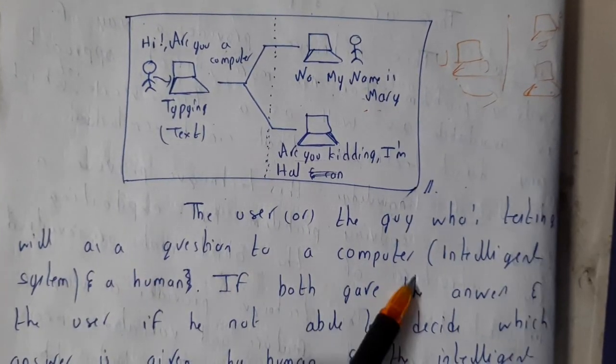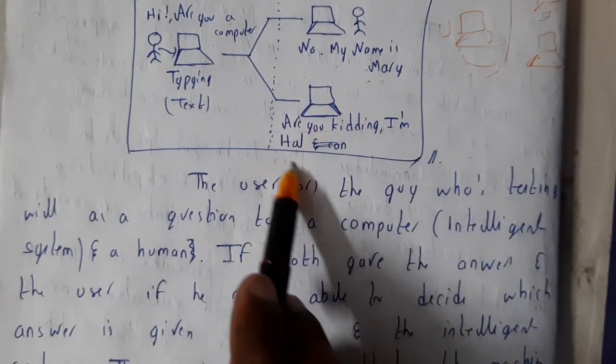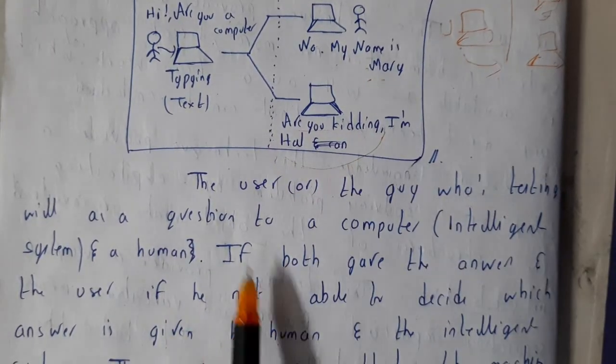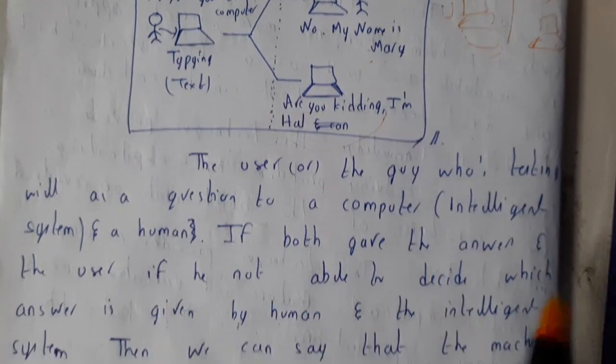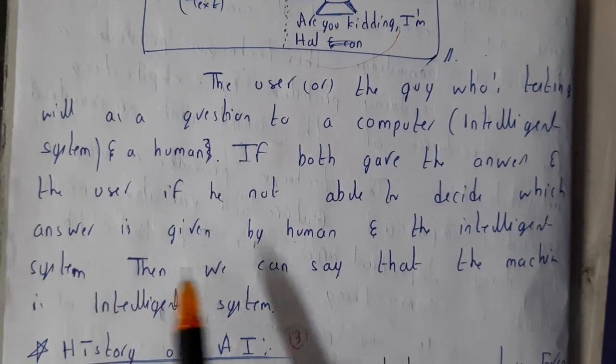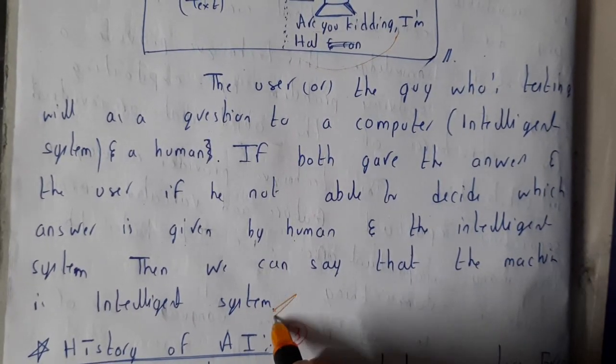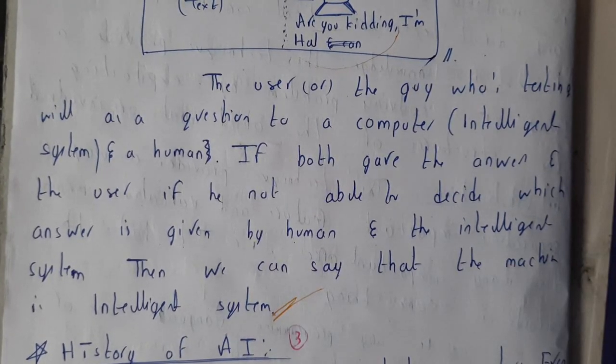The user, the guy who is testing, will ask a question to the computer, the intelligent system, and the human. If both give the answer and the user is not able to decide which answer is given by human and the intelligent system, then we can say that the machine is an intelligent system. So I hope everyone got a small idea on this.